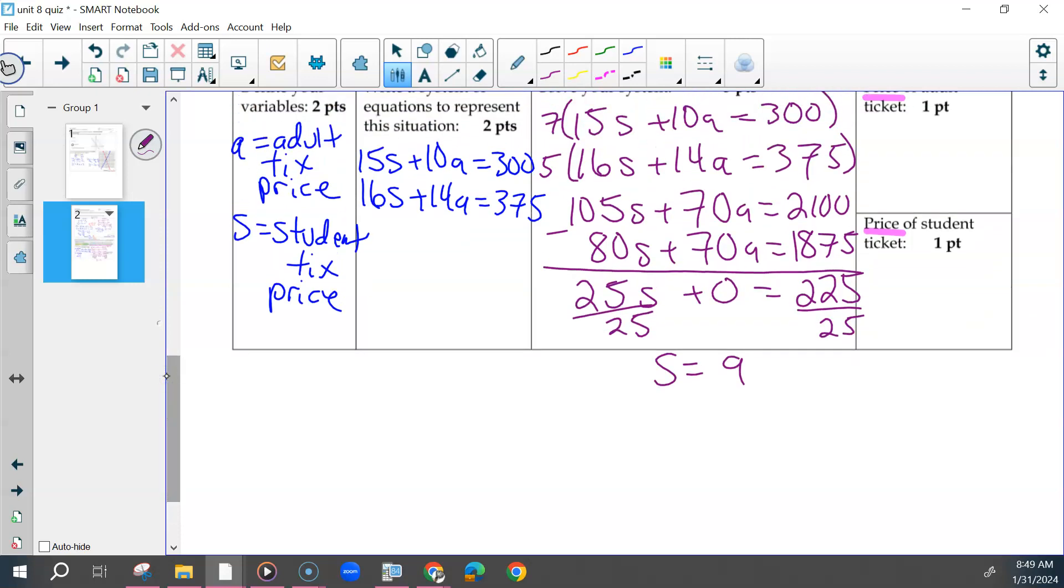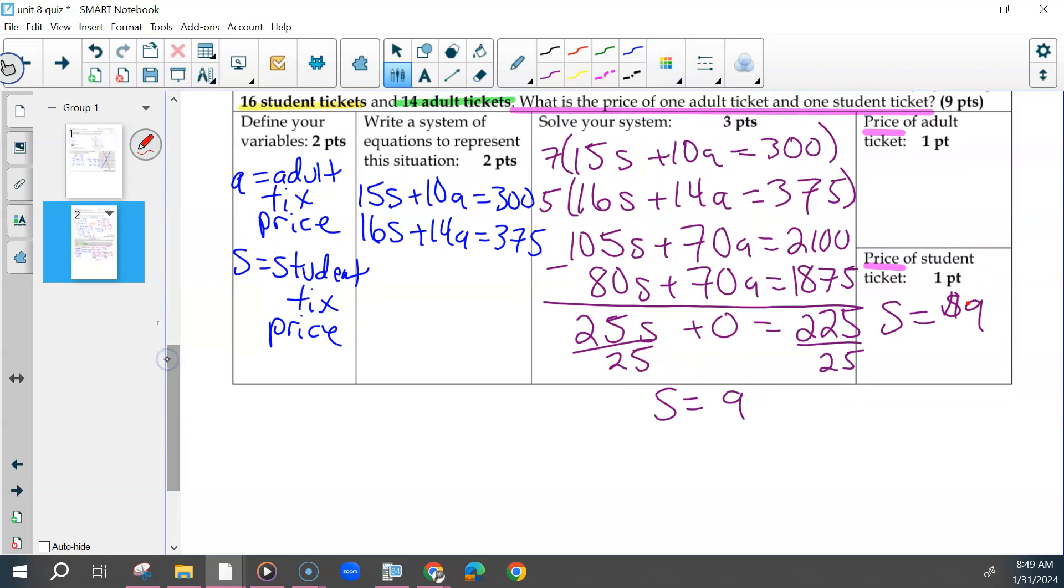So then your price should have been $9. If you just put 9, you were missing your labels. And then use that number to go back and find A or your other variable. Some of you used the first equation, some of you used the second. Some of you used these ones, but it didn't matter. I'm going to use the very first one.